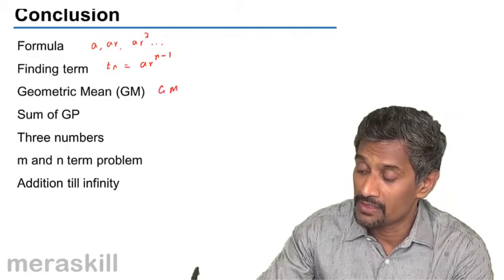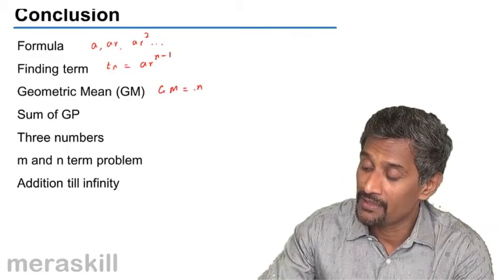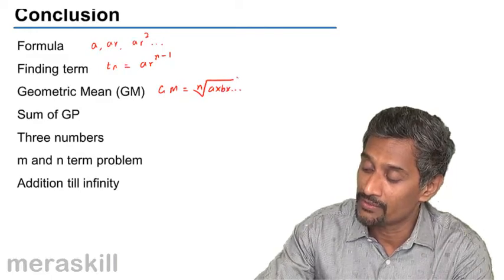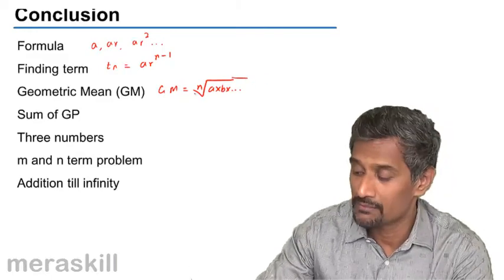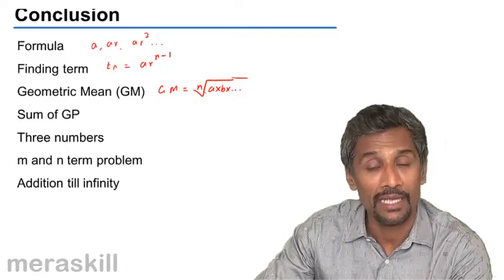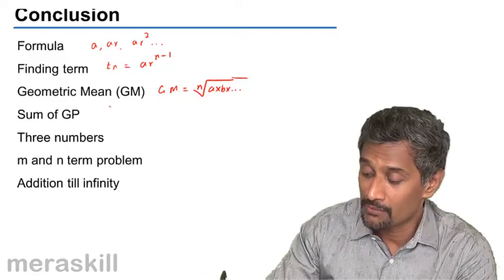Geometric mean is nothing but the nth root of a into b into whatever raised to n. That means suppose there are two terms, the geometric mean is you find the product and then find the square root. Sum of GP we did.